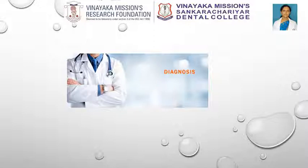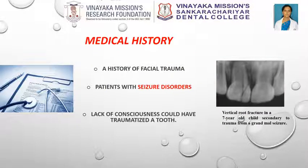If a crack is suspected, proper medical and dental history and several diagnostic steps should be taken to confirm the suspicion. Medical history: a history of facial trauma may help in creating a differential diagnosis. For example, patients with seizure disorders may be prone to dental trauma from severe seizure-induced clenching or from physical injuries sustained secondary to a grand mal seizure. Additionally, a patient who had a stroke, heart attack, or any other ailment resulting in loss of consciousness could have traumatized a tooth, potentially resulting in a vertical root fracture.